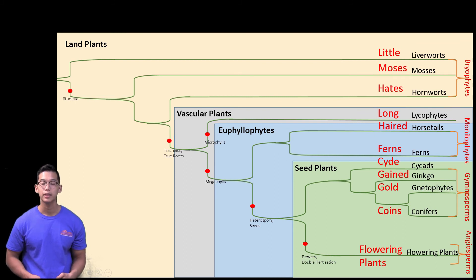Sid for cycads, gained for ginkgo, gold for gnetophytes, coins for conifers, and flowering plants for flowering plants.